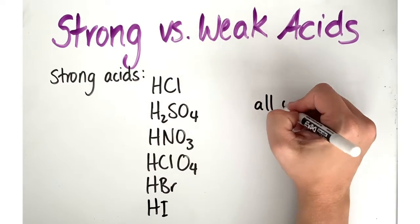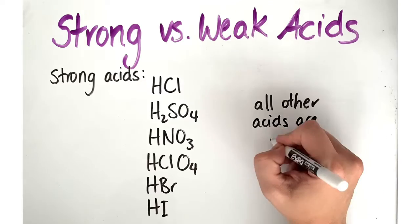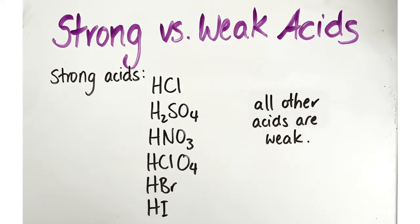So our strong acids are shown here. We've got hydrochloric acid, sulfuric acid, nitric acid, perchloric acid, hydrobromic acid, and hydroiodic acid.